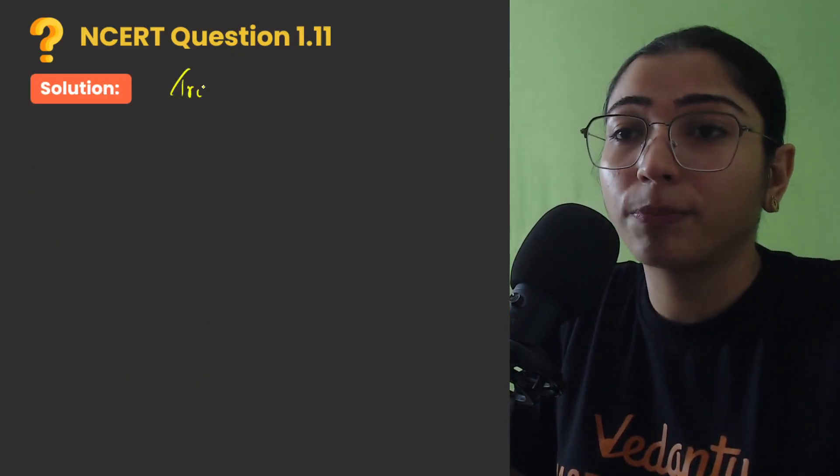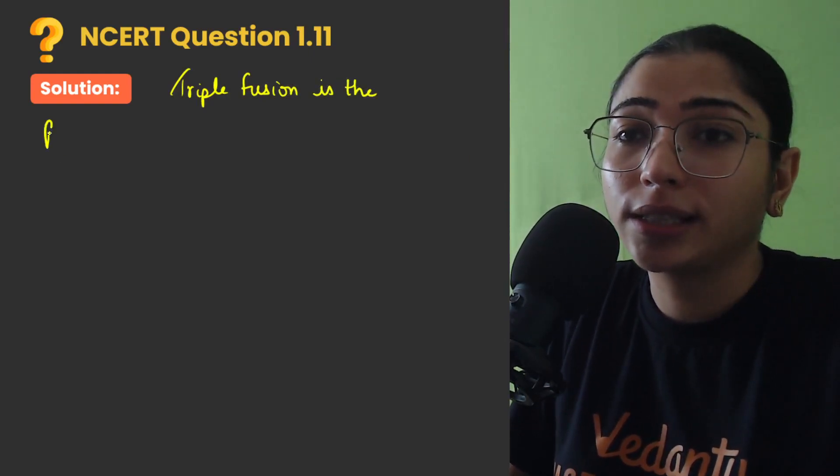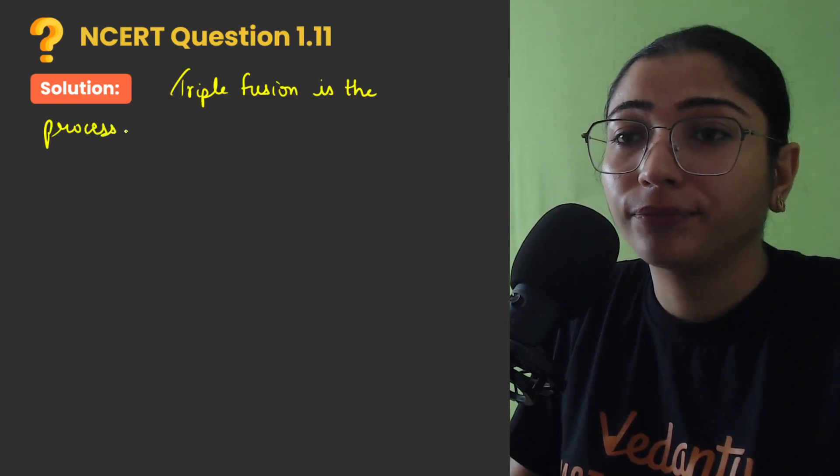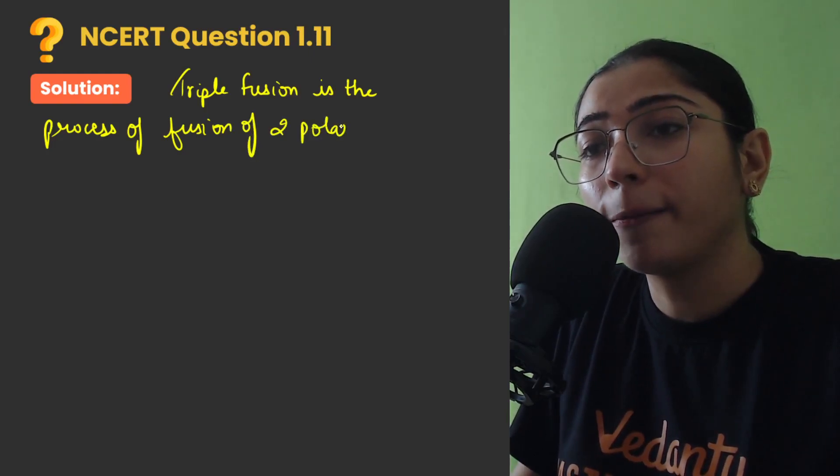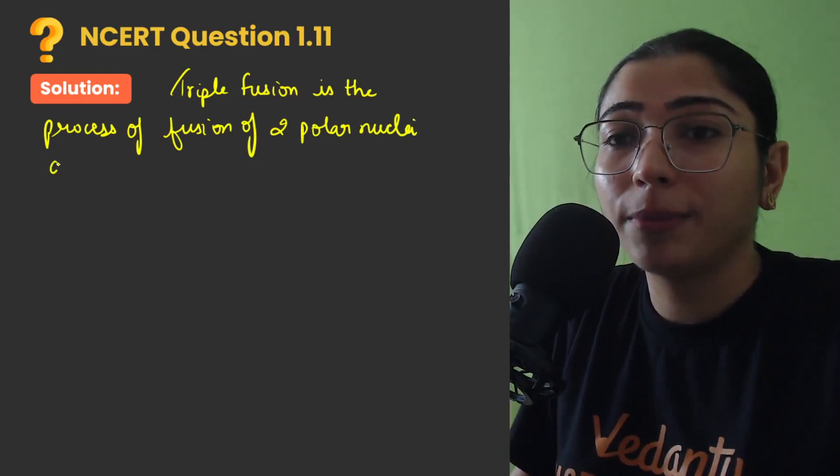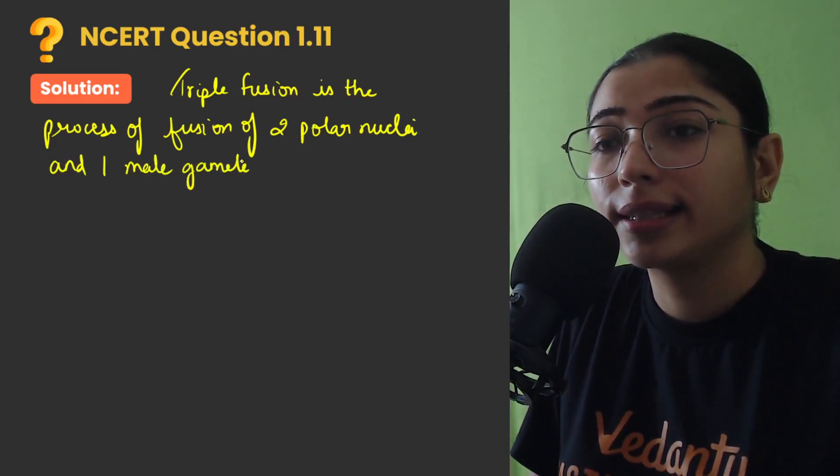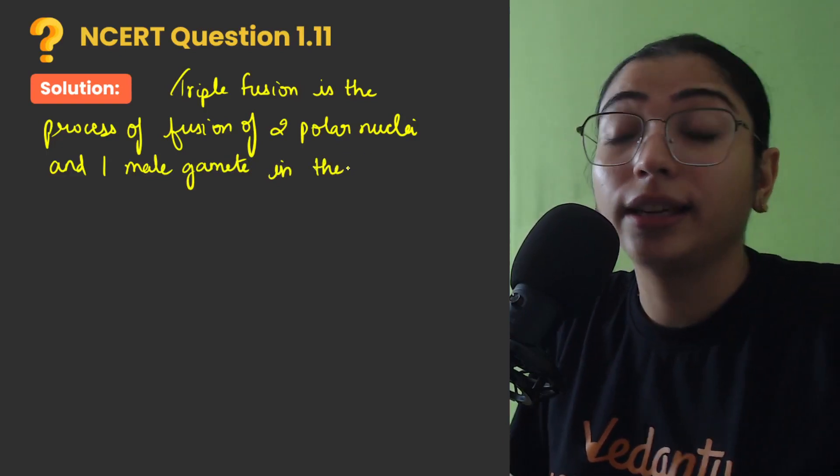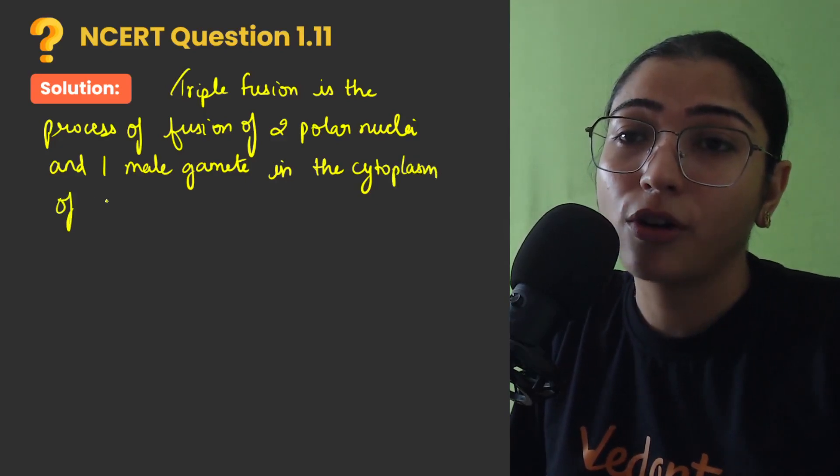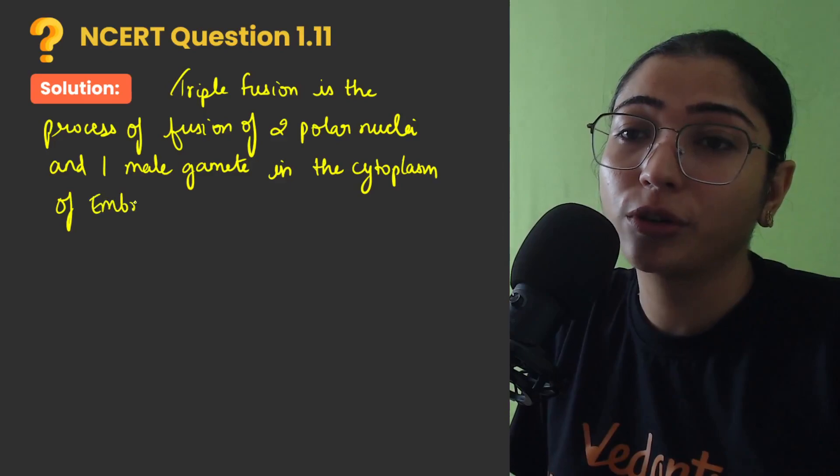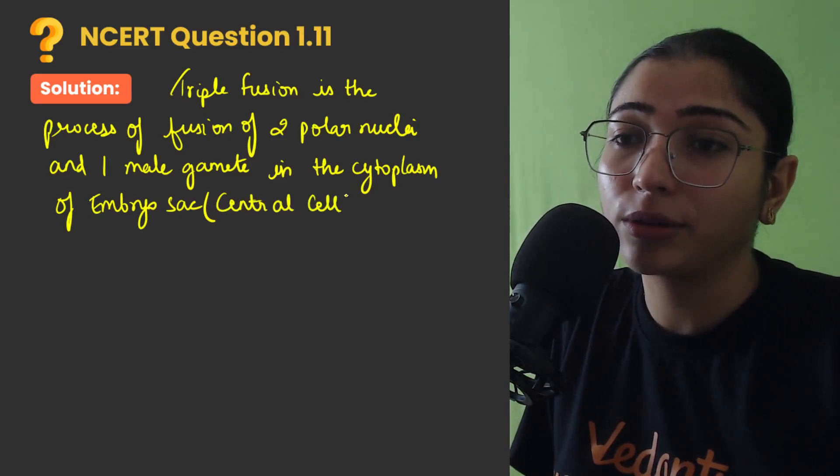First of all we have to answer, what is triple fusion? So triple fusion is the process of fusion of 2 polar nuclei and 1 male gamete in the cytoplasm, in the basically embryo sac, in the cytoplasm of the embryo sac. And if you want to specify the location you can write it in the bracket that it is occurring in the central cell, large central cell.